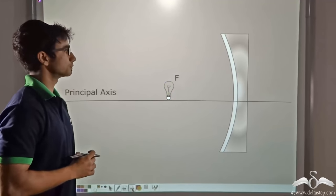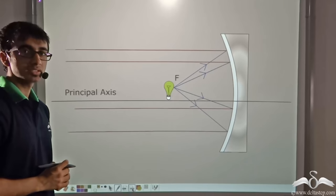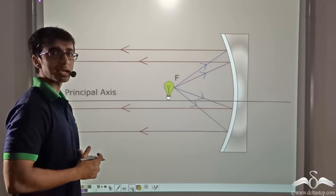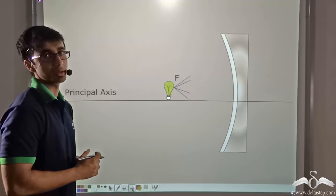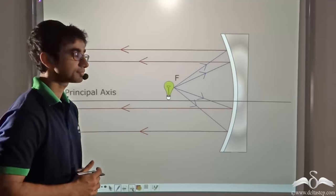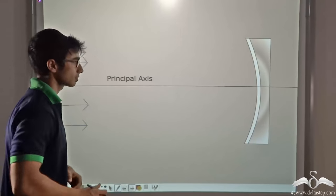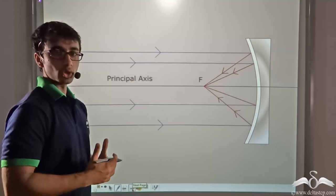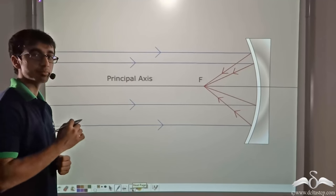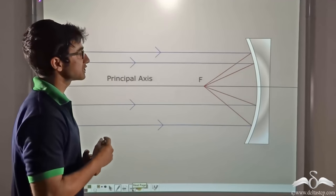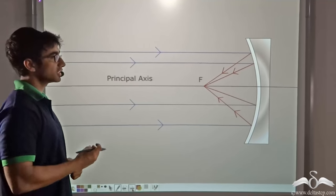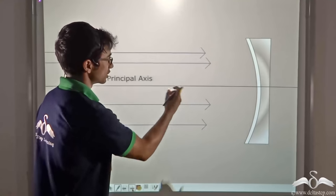Now I have a question for you. What do you think will happen if the bulb is not kept at the focus? What do you think will happen if we change the position of the bulb? We are going to find that out through ray diagrams. Before we talk about changing the position of the bulb, we need to recall a very important aspect: rays parallel to one another and to the principal axis converge at a point that is known as the focus.